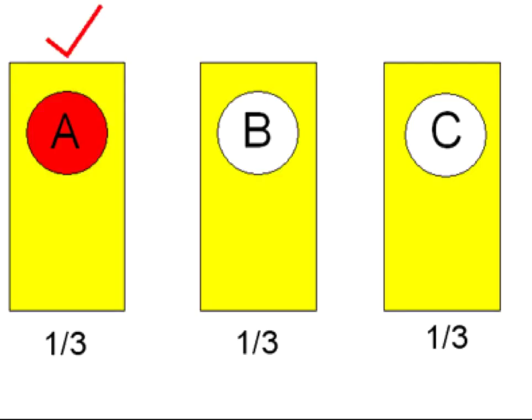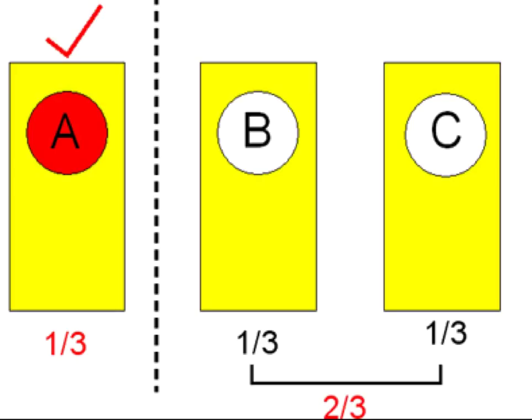Let's say you choose door A. Now, let's divide the three doors into two groups. There is a probability of one-third that the prize is behind the door that you chose, A, and a probability of two-thirds that the prize is behind one of the other unchosen doors, B or C.